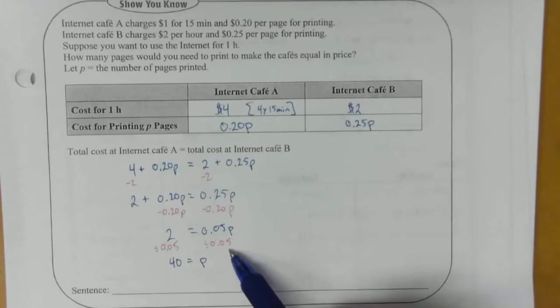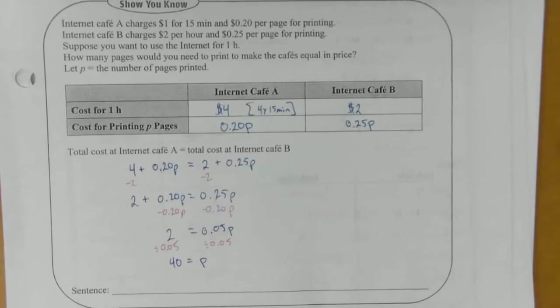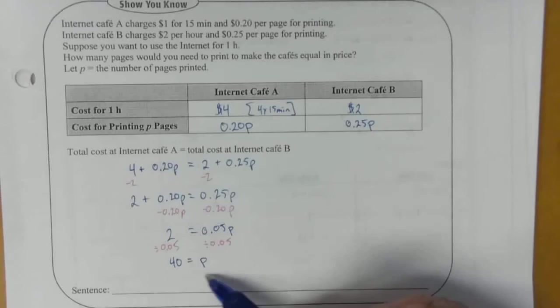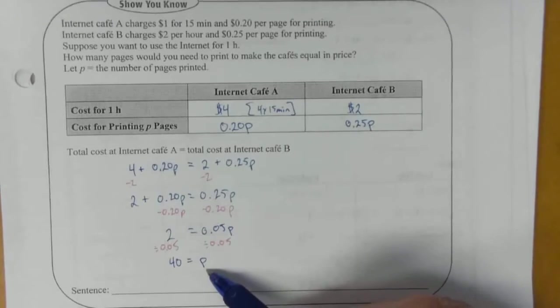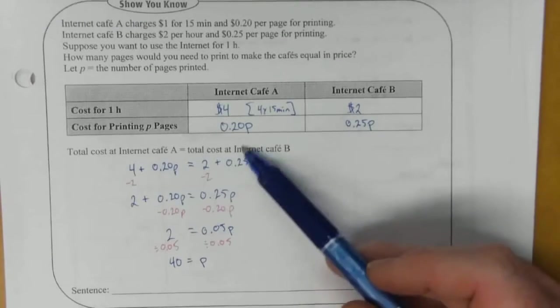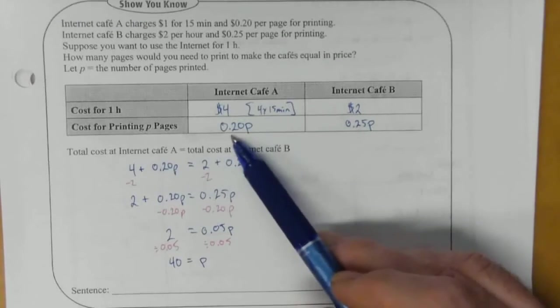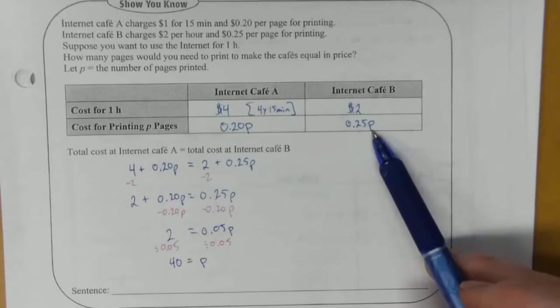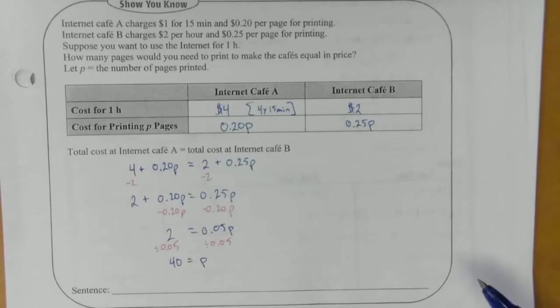And when you do that you end up with 40 is equal to P. When you divide by 0.05 it's like multiplying by 20. So P is equal to 40. So at 40 pages the two cafes are the same. If you've got more than 40 pages then A will be cheaper because it's only 20 cents per page. If it's less than 20 pages then B is cheaper.